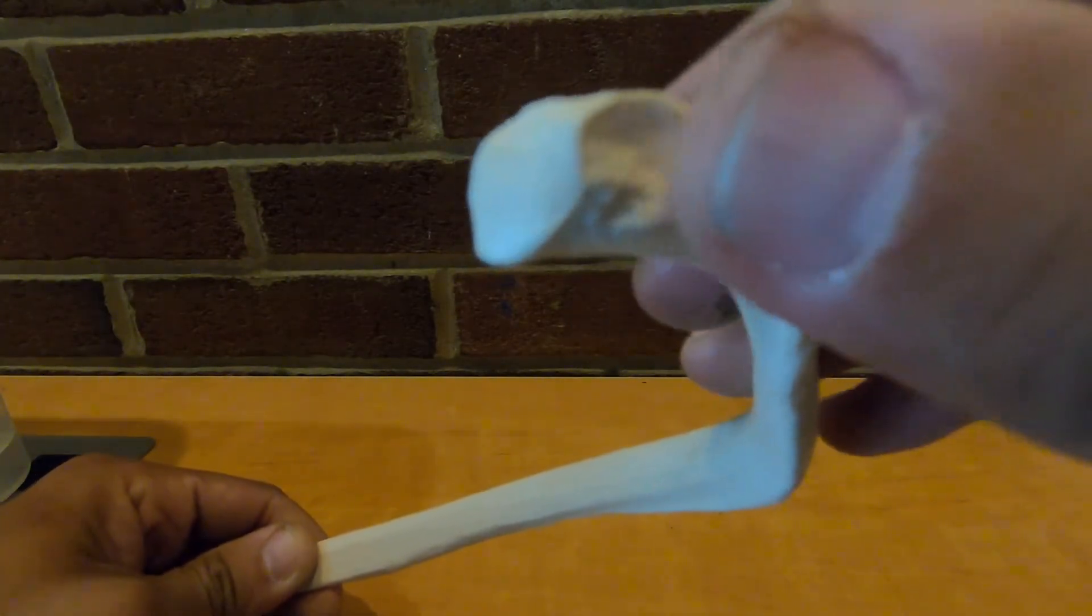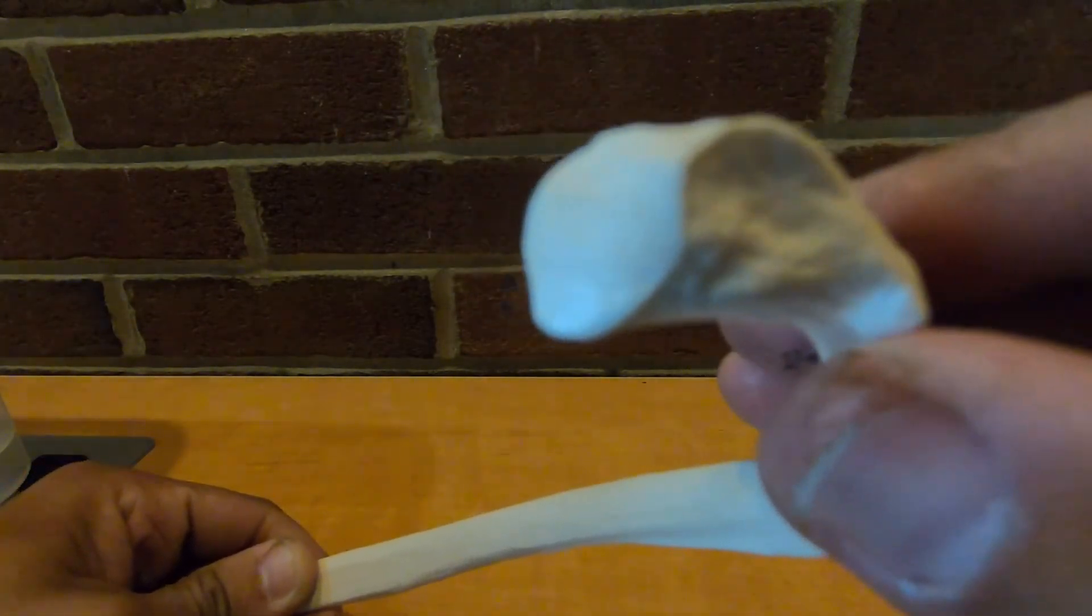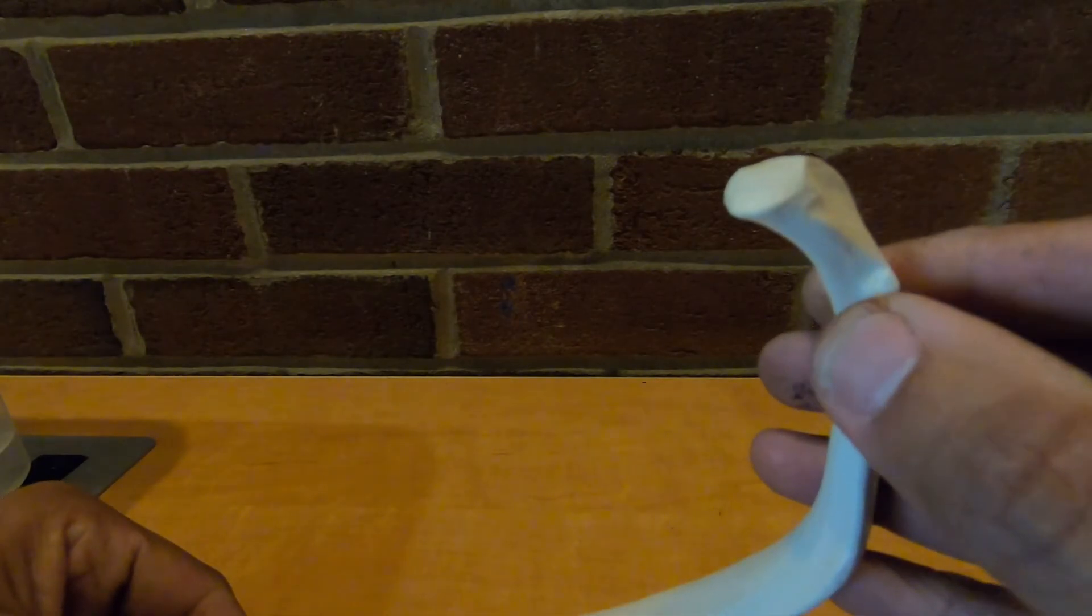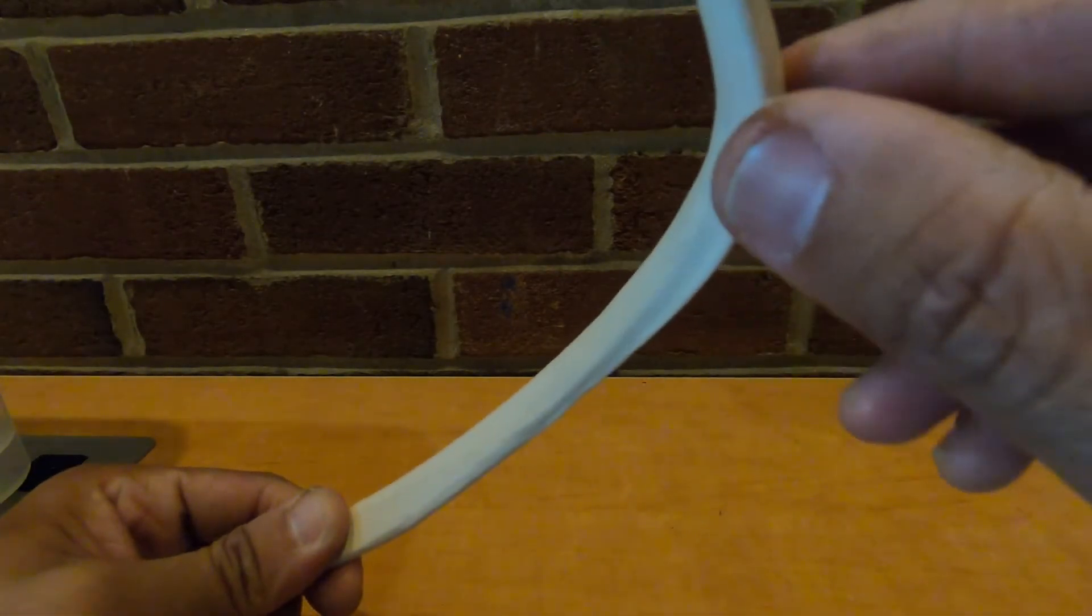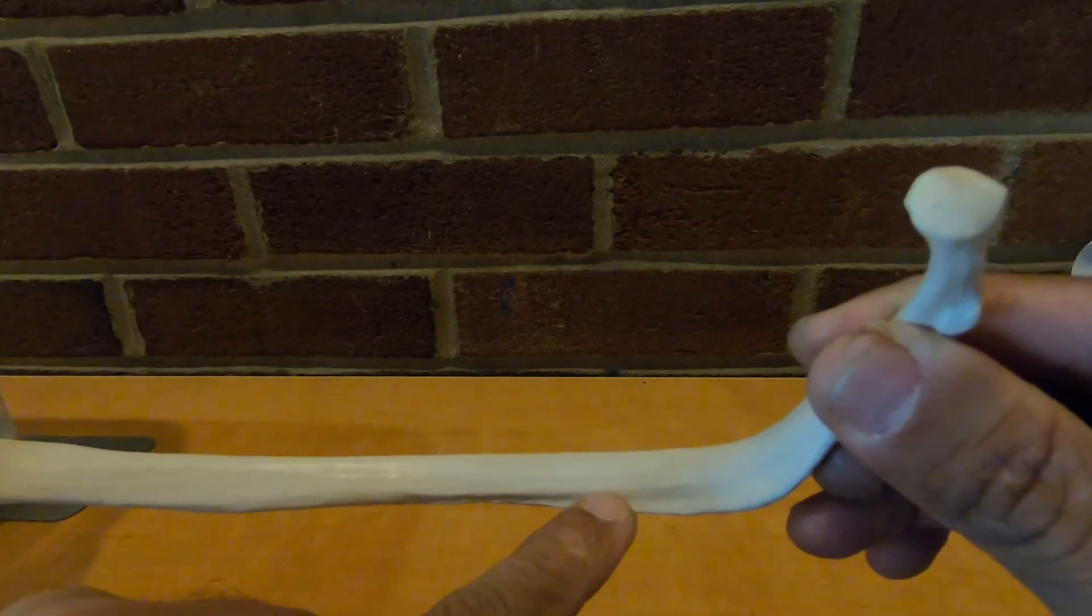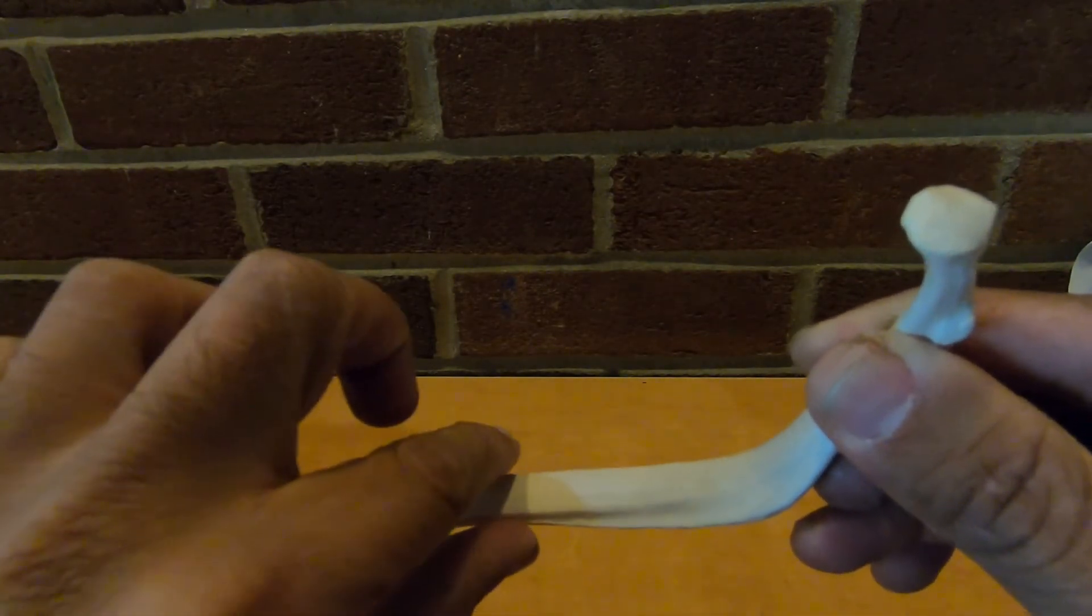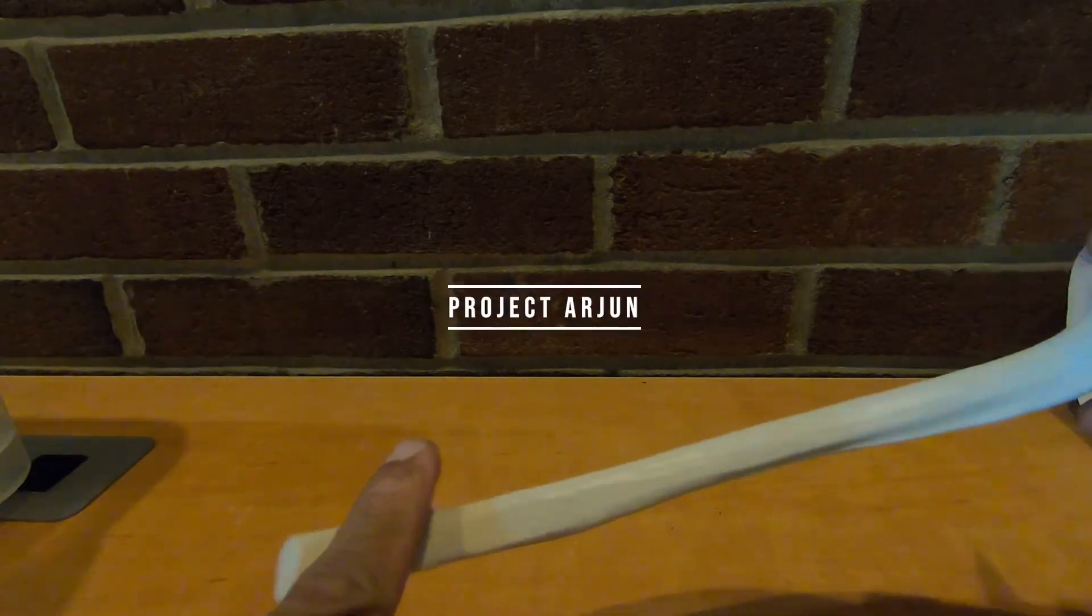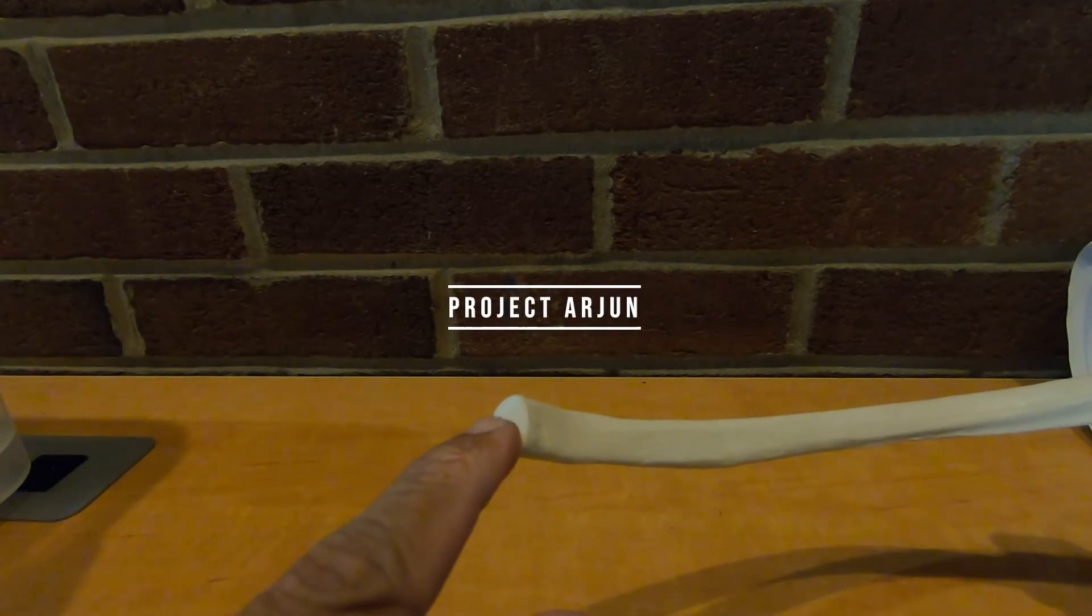Just to go over there again, we have the head, neck, articular facet on the tubercle, the angle of the rib, costal groove, shaft, and junction with the costal cartilage.